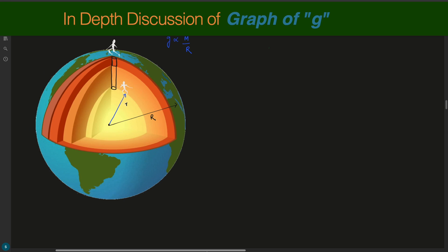To do that, we need to first solve the graphical problem and you need to have the basic idea of the graph and how we can draw it. For example, if there is an equation y = mx, you will instantly say that this is a straight line. Why? Because the power of y is 1 and the power of variable x is 1. When the powers of x and y are equal, the graph will be a straight line.